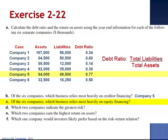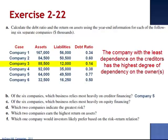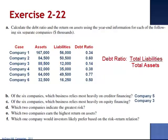Looking back at Company 5, $0.77 of every dollar of assets is owned by the creditors, which implies that the remaining $0.23 of every dollar of assets is owned by the owners — this is referred to as equity financing. The company that relies most heavily on the owners would be Company 3, since Company 3 has only $0.14 of every dollar owned by non-owners, and the remaining $0.86 is owned by the owners. The company indicating the greatest risk would be Company 5, as it relies on the banking community rather than the owners.